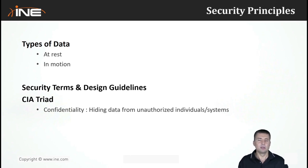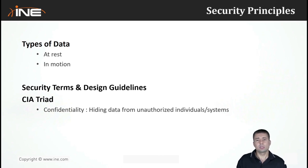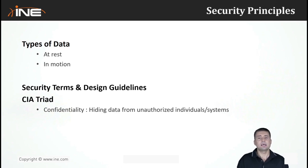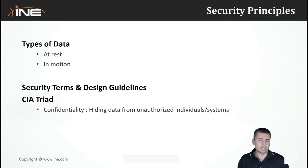A similar logic applies to integrity. Integrity refers to keeping data in its original state — ensuring the data was not modified at any point. Whether storing data on a server or sending it over a network, only authorized systems or individuals should be allowed to modify it. Technically, integrity doesn't prevent modification but ensures any potential modification is detected. For data at rest, physically securing files works; for data in motion, we use a hashing function to ensure the integrity of information exchanged over the network.